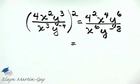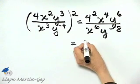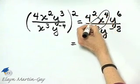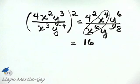And now let's continue to simplify because we do have some like bases. What is 4 squared? That's 4 times 4 or 16. And now let's deal with the bases of x.